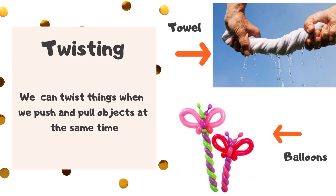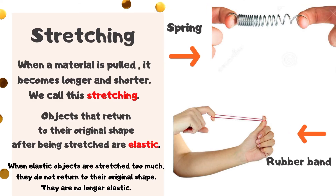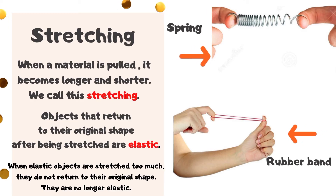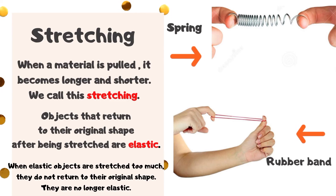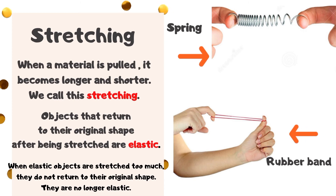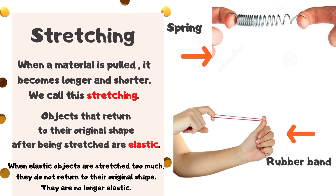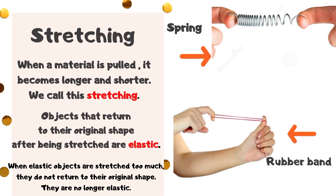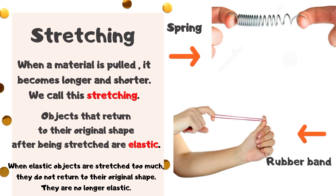All right, next — stretching. When a material is pulled it becomes longer. We call this stretching. Objects that return to their original shape after being stretched are elastic. When elastic objects are stretched too much, they do not return to their original shape and are no longer elastic. Examples of objects that can be stretched are a spring and a rubber band.